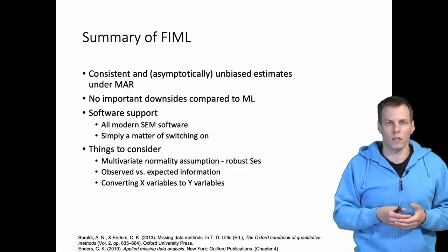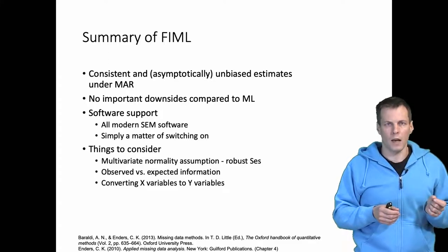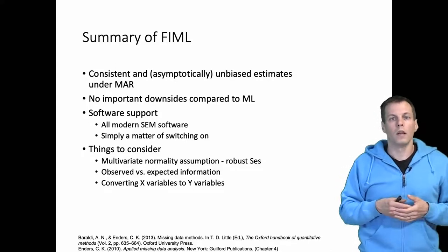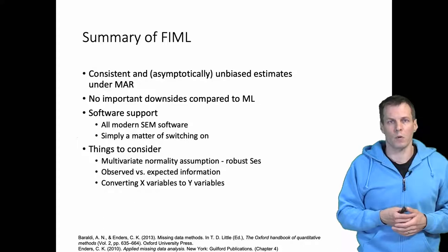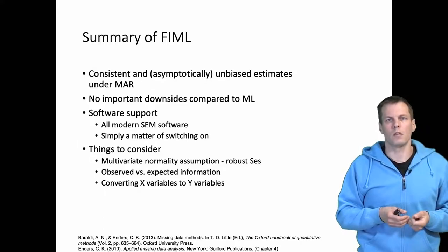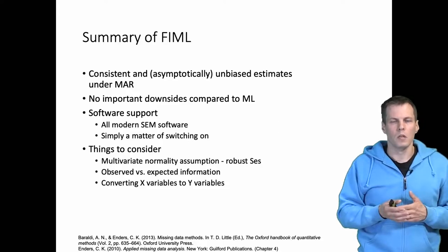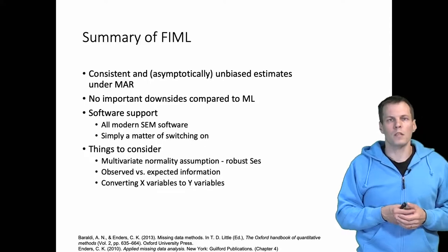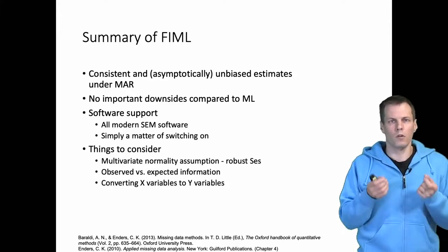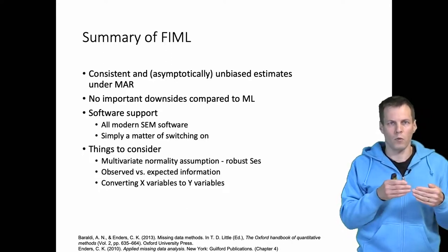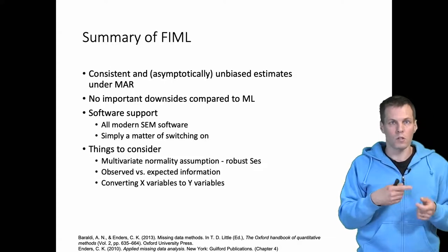This is generally the default, but it is good practice to check. Another consideration is the role of X and Y variables. X variables are observed variables with no incoming paths, while Y variables have incoming paths — so indicators of latent variables are all Y variables, and X variables are observed predictors. FIML is based on considering the Y variables, so you might still get listwise deletion of X variables. The workaround is to treat X variables as Y variables, which just means telling the statistical software to do so, and it will then apply the missing data algorithm.